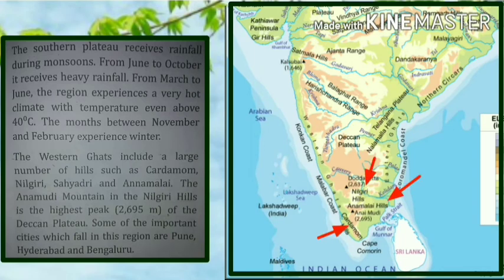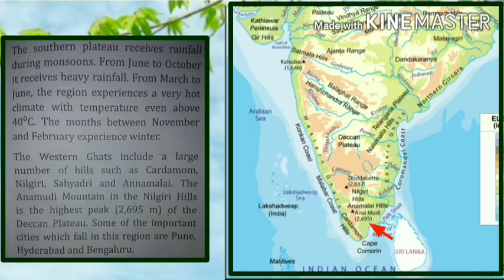The Western Ghats include a large number of hills such as Cardamom, Nilgiri, Chandra, and Annamalai. The Annamalai mountains in the Nilgiri Hills is the highest peak of the Deccan Plateau, with a height of 2695 meters.